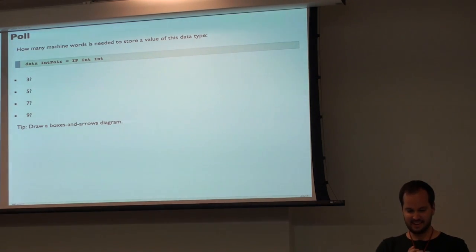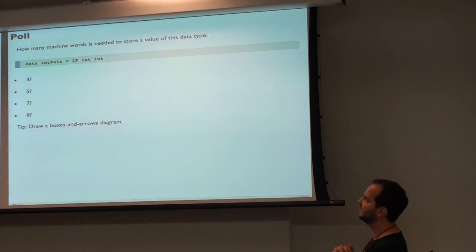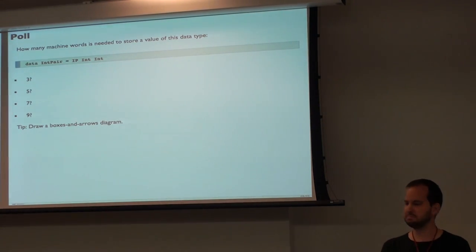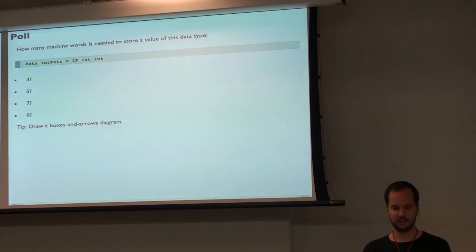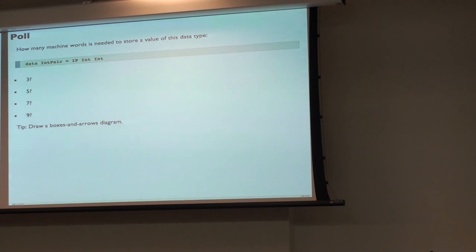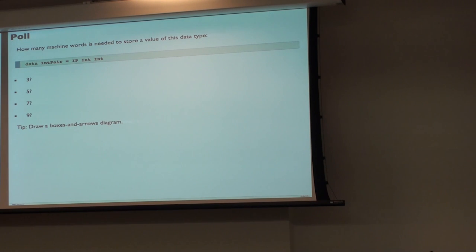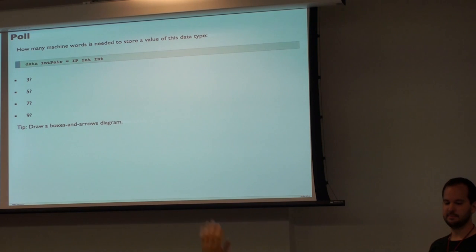So with this under our belts, I'd like to do a little poll. Here I have a data type called IntPair — my specialized pair that only works for Ints. It has a constructor IP, short for IntPair, and two fields of type Int — boxed Int. The question is: how much space does IntPair one two take on the heap, including the space for the Ints themselves, not just the pair? Hands up for three... hands up for five... hands up for seven... hands up for nine.